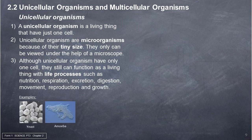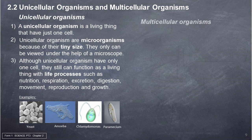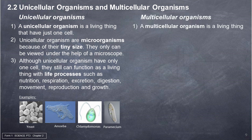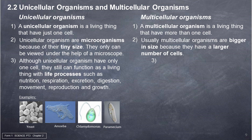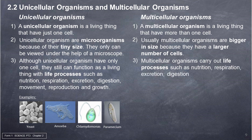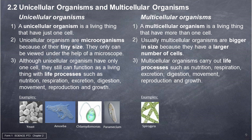Examples of unicellular organisms: Yeast, Amoeba, Chlamydomonas, and Paramecium. Multicellular organisms: 1. A multicellular organism is a living thing that has more than one cell. 2. Usually multicellular organisms are bigger in size because they have a larger number of cells. 3. Multicellular organisms carry out life processes such as nutrition, respiration, excretion, digestion, movement, reproduction, and growth. Examples: Spirogyra, Muca, and Hydra.